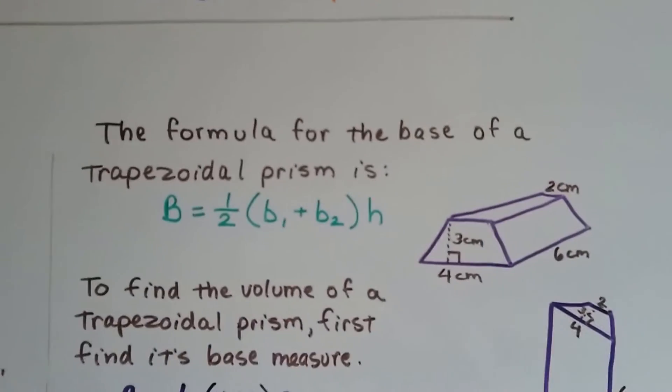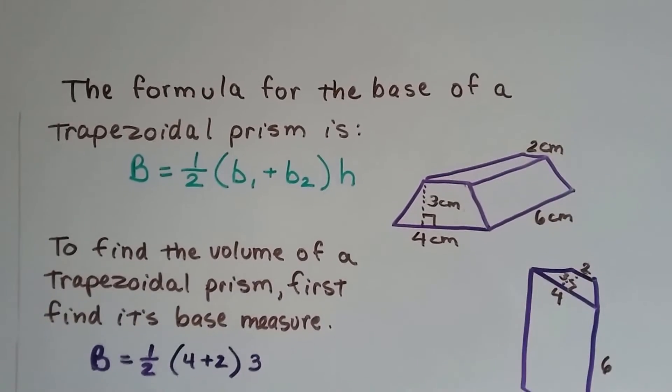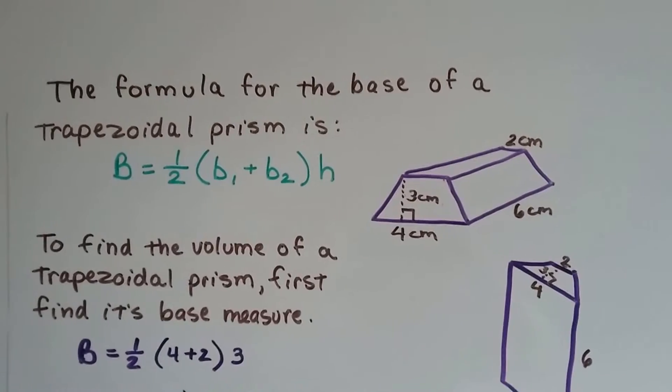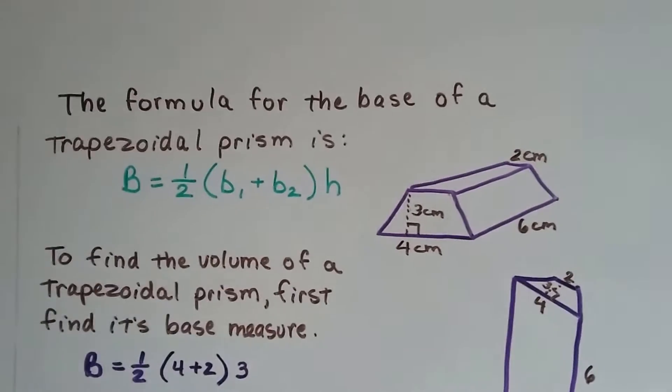To find the volume of a trapezoidal prism, we need the formula for the base of a trapezoidal prism. And that's b equals half base 1 plus base 2 times the height.